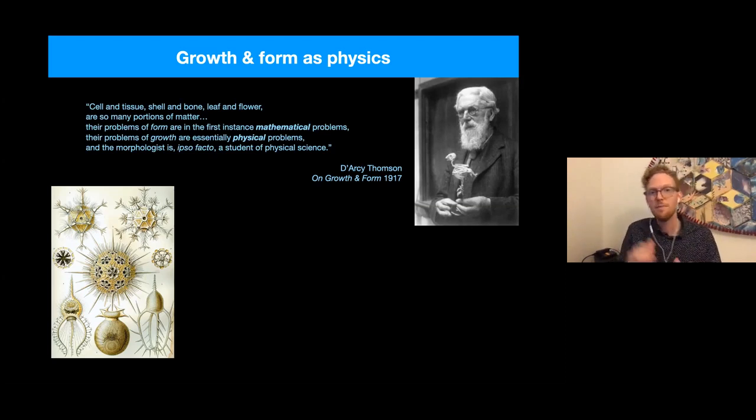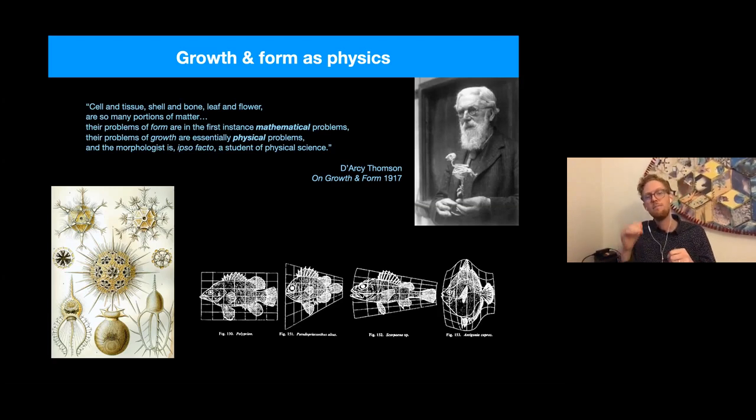So while some of D'Arcy Thompson's particular ideas turned out to be technically flawed, the spirit of his vision strikingly mirrors how we physicists now approach such problems a century later. And in particular, I'll highlight here that he uses maps to understand the relation of forms between different species. And also the forms that arise during the growth and development of individual animals. He studies how physics constrains these maps of tissue form during development.